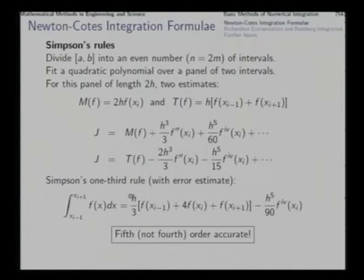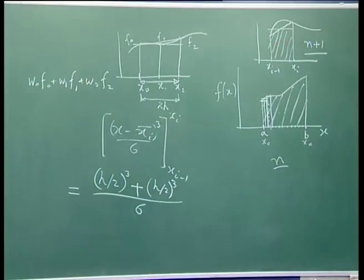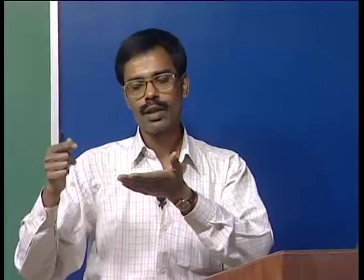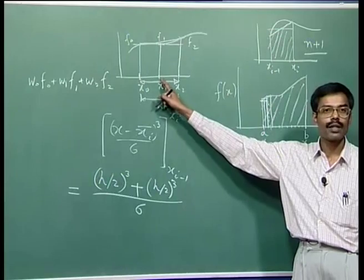The rule is called 'one-third' because of the 1/3 factor, and the leading error term is fifth order. We expected up to fourth-order accuracy, but because of symmetry we gain an extra order. Over a complete domain, the corresponding error is only fourth order. Simpson's 3/8 rule, using 4 points over 3 subintervals fitting a cubic, has only fourth-order accuracy over the full domain — not gaining the extra order because it lacks the midpoint advantage. Still higher-order rules are not advisable as they produce high-oscillation polynomials that do not truly represent the function.